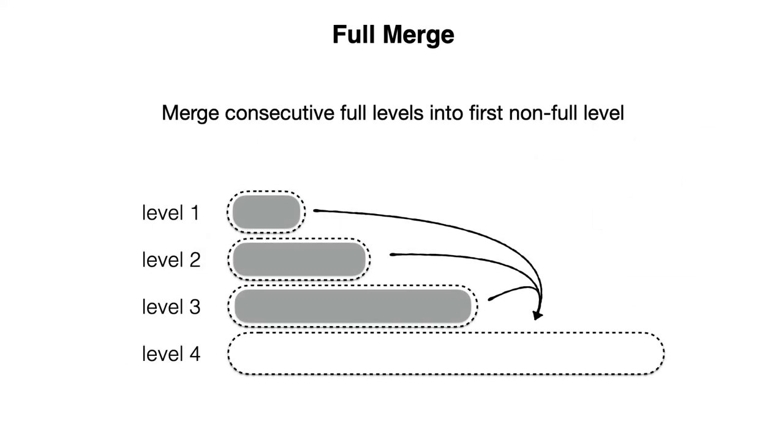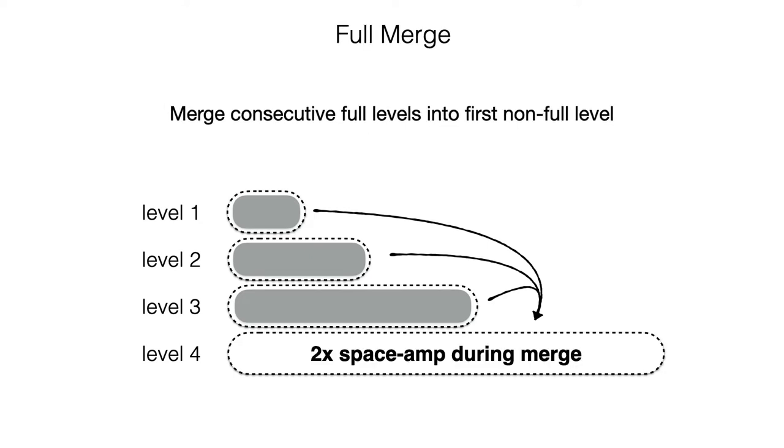With full merge, we compact full consecutive levels all at once into the next largest non-full level. The problem with this approach is that during a merge operation into the largest level, we need double as much physical space as the size of the live data to execute the merge. The reason for this is multi-version concurrency control. We cannot delete the original files until the merge operation is finished. We refer to this phenomenon as transient space amplification. It is called transient because it only lasts for the duration of one merge operation.